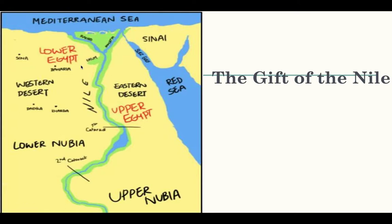The Nile created a fertile river valley 13 miles wide. You can see the river with green surrounding it — that would be 13 miles wide. And you can see it was surrounded by desert on both sides, with the river and then the fertile green river valley around it.